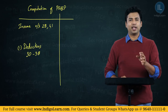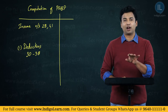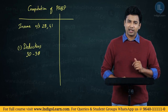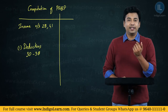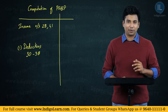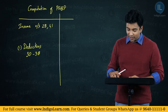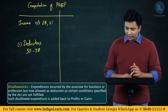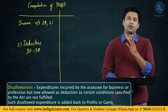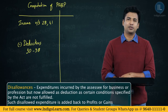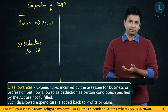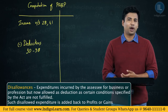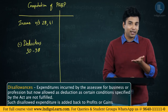Every expenditure which has been incurred and accounted for may not be allowed as a deduction. These are called disallowances for the purpose of PGBP. When you disallow a certain expenditure, what happens to your profit? Profit increases.